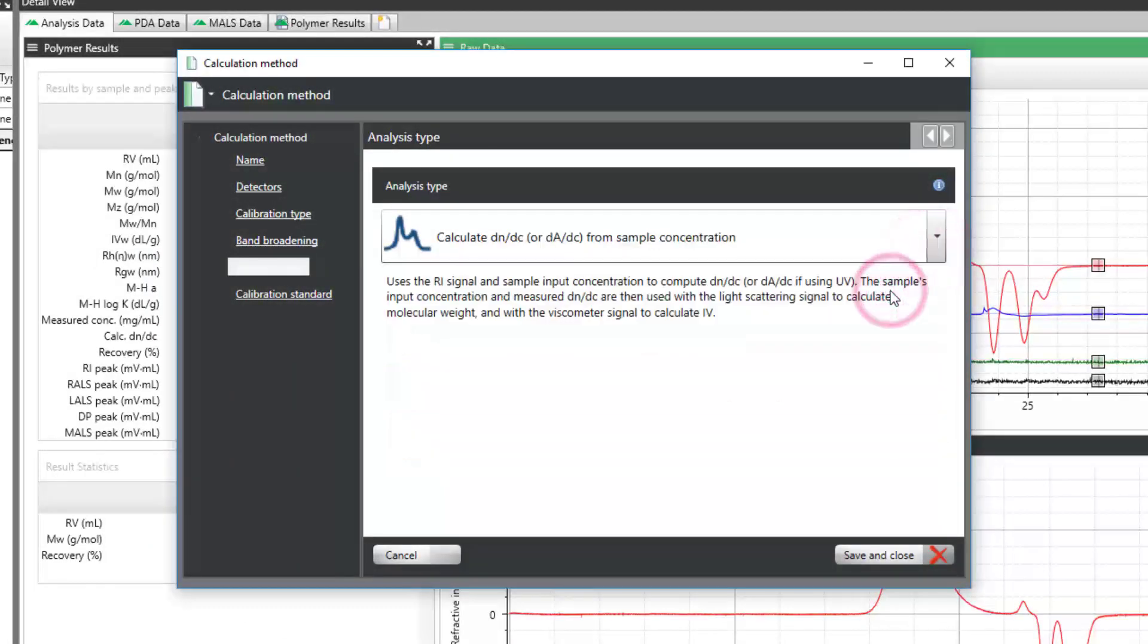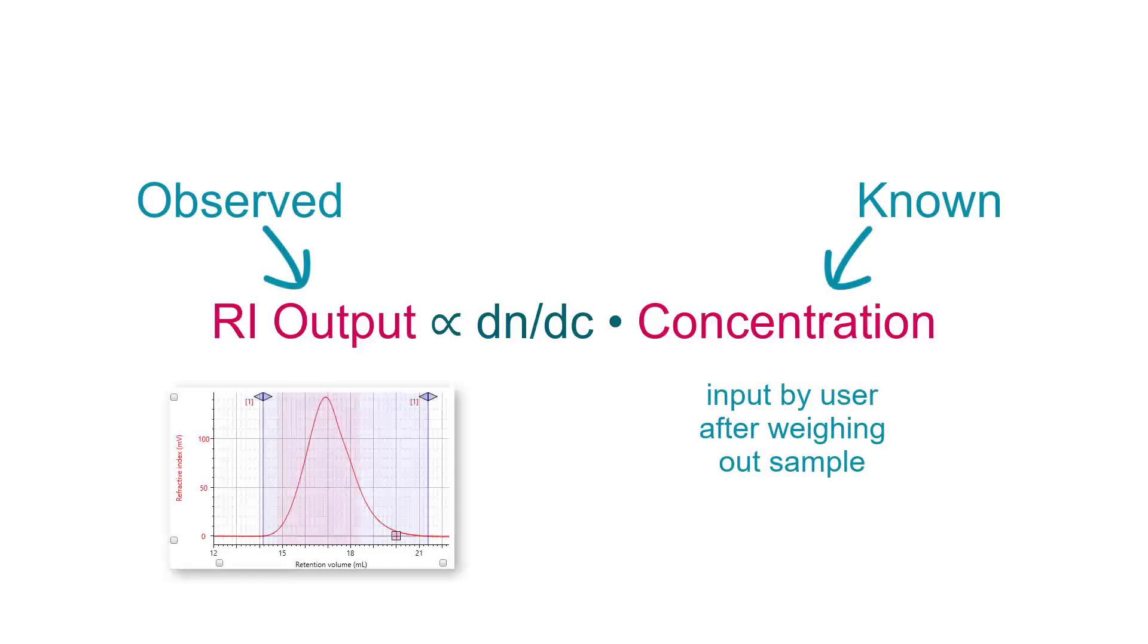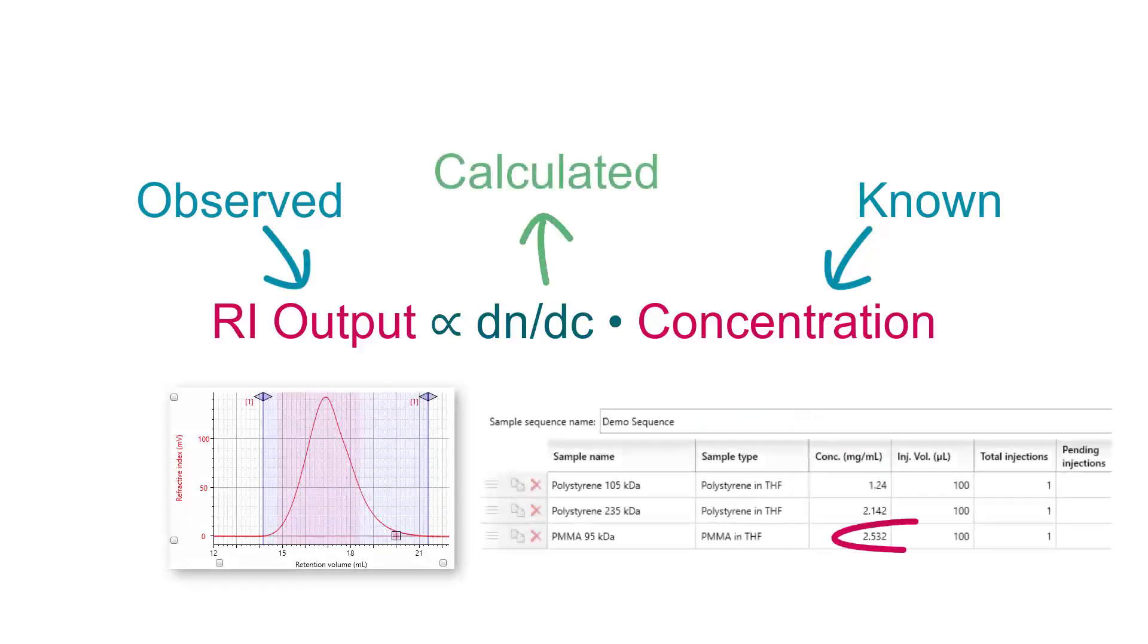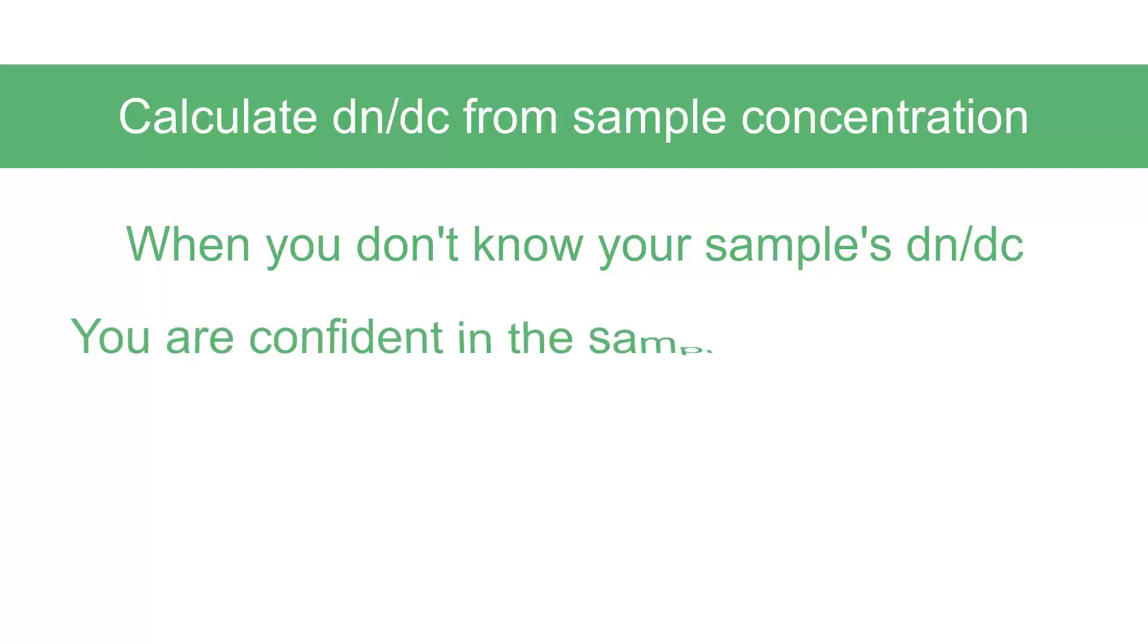The first, Calculate DNDC from Sample Concentration, assumes a 100% quantitative recovery of the sample to determine the DNDC value. The software accepts that the total amount of sample injected, based on the input concentration and injection volume, is responsible for the entire refractive index response designated by the limits and baseline. The DNDC value can then be determined and used in subsequent molecular calculations. This method works well if you don't have an established DNDC value for your sample and you are confident in the sample's concentration.